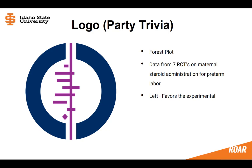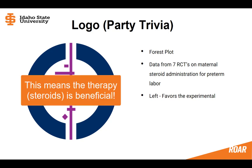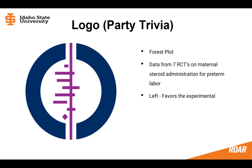This diamond is clearly on the side that favors the experimental. In this case, it means that giving a mother steroids before they give birth to a preterm baby is beneficial. These studies existed for almost 20 years before someone put them all together and saw that this is a treatment that should be standard practice. If someone had done this earlier, who knows how many preemies could have been helped? This is the power of systematic reviews.